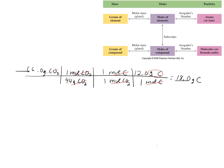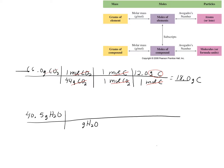Now we do the same thing with grams of water. Starting with 40.5 grams of H2O, we need our units to cancel. Grams of H2O is on top, so grams of H2O goes on the bottom. From the periodic table, the molar mass of water is 18.0 grams in one mole of water. Units are canceling — we're going in the right direction.